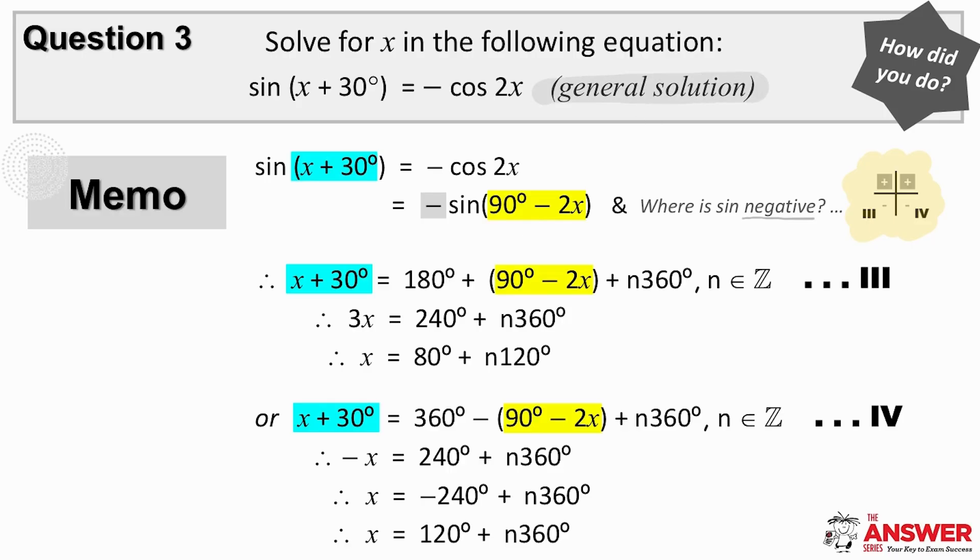In the case of the third quad solution, we have the equation x plus 30 equals 180 plus the reference angle plus n360. Remember where we have to indicate that n is an integer because the solution occurs every 360 degrees. And simplifying this equation brings us to the first of the general solutions for x which equals 80 plus n120.